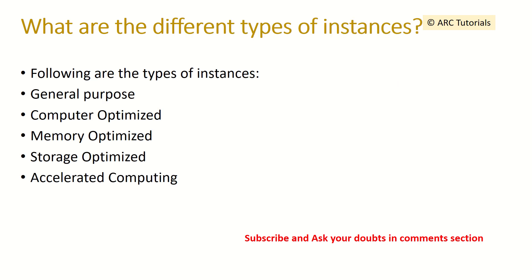What are the different types of instances? There are five types of instances: general purpose, compute optimized, memory optimized, storage optimized, and accelerated computing.